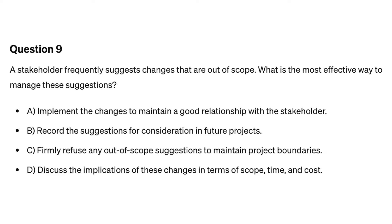Question nine. A stakeholder frequently suggests changes that are out of scope. What is the most effective way to manage these suggestions? A. Implement the changes to maintain a good relationship with the stakeholder. B. Record the suggestions for consideration in future projects. C. Firmly refuse any out-of-scope suggestions to maintain project boundaries. D. Discuss the implications of these changes in terms of scope, time, and cost.